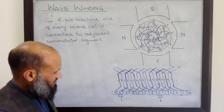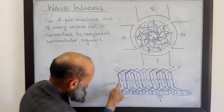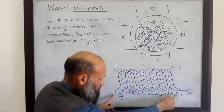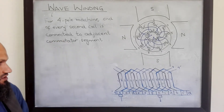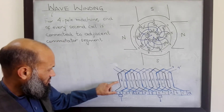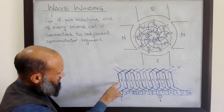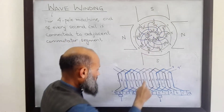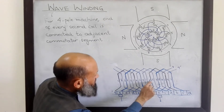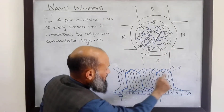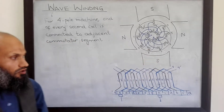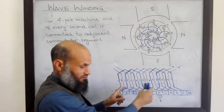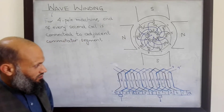Between these two commutator segments there are four conductors: conductor one, one-dash, six, and six-dash. Between two commutator segments there are four conductors, and one conductor is under each pole. This conductor one is under this pole, one-dash is under this pole, six is under this pole, and six-dash is under this pole.